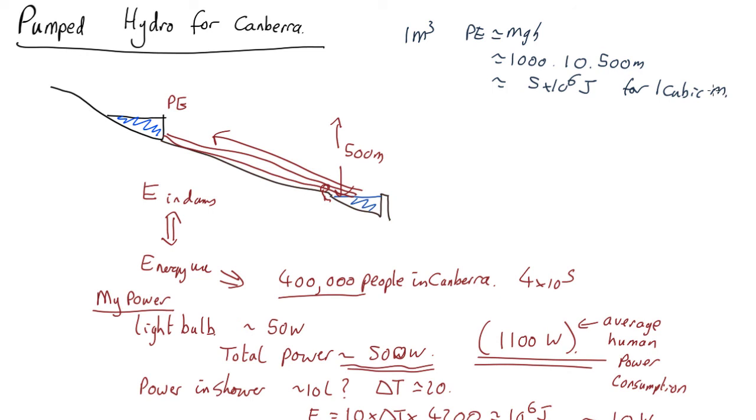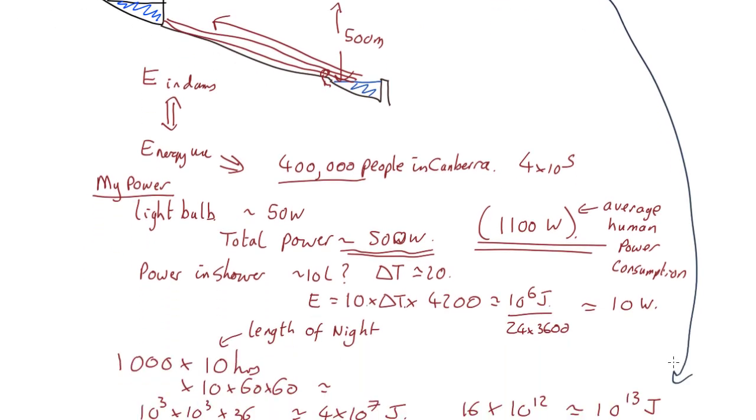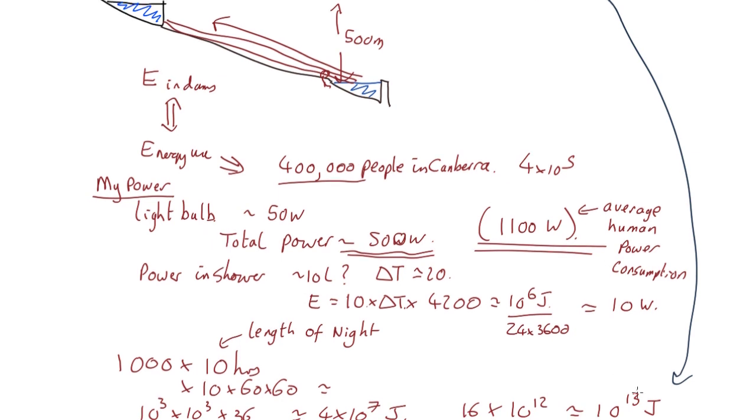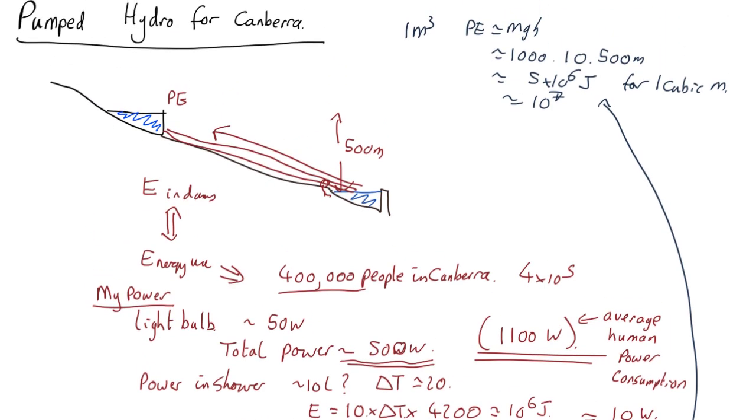And actually these things are not that far off 100% efficient, so that would do a good estimate. So if we compare it to the 10 to the 13 joules, 5 by 10 to the 13, we'll call that about 10 to the 7. It's the nearest order of magnitude. So that means we need 10 to the 6 meters cubed of water.